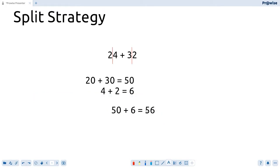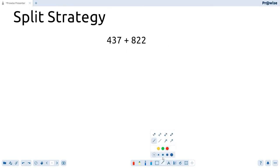It's a very simple strategy, very easy to use once you get the hang of it. We might do another example with a much larger number. Okay, we've got a much larger number here: 437 plus 822. So a little bit more tricky than our original example, but the technique remains the same.